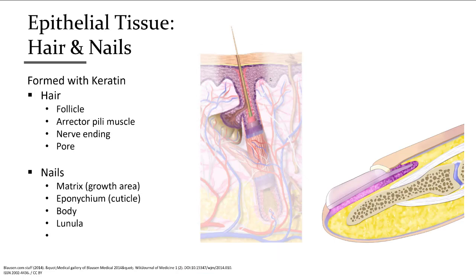Another part of epithelial tissue includes hair and fingernails. Hair is made by epithelial tissue. Hair structures include the follicle, the erector pili muscle — which makes your hair stand on end when scared or cold — and the pore where hair exits. Fingernails have a matrix, which is the growth area, the epicondrium (the cuticle), the body, and the lunula.